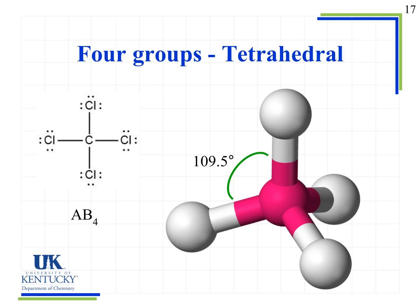There are geometries involving five and six groups, but we're not going to cover those. When we look at biological molecules in the body, we're only really going to see up to tetrahedral. So we'll focus on two, three, and four groups around the central atom.